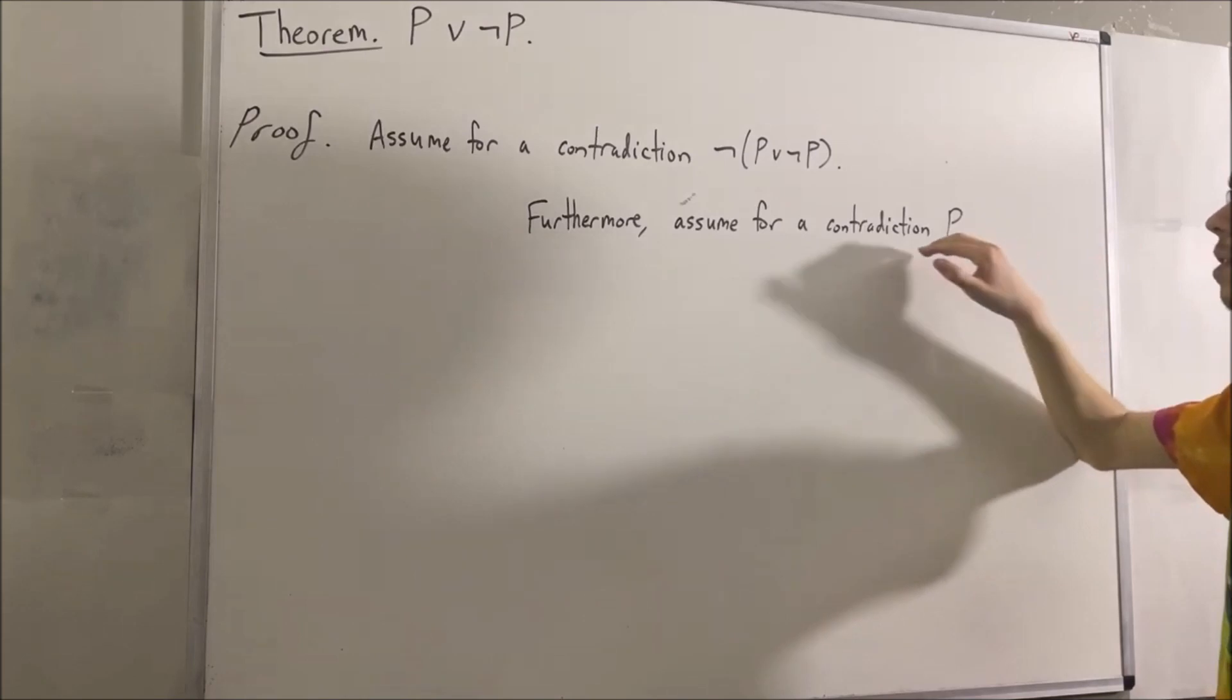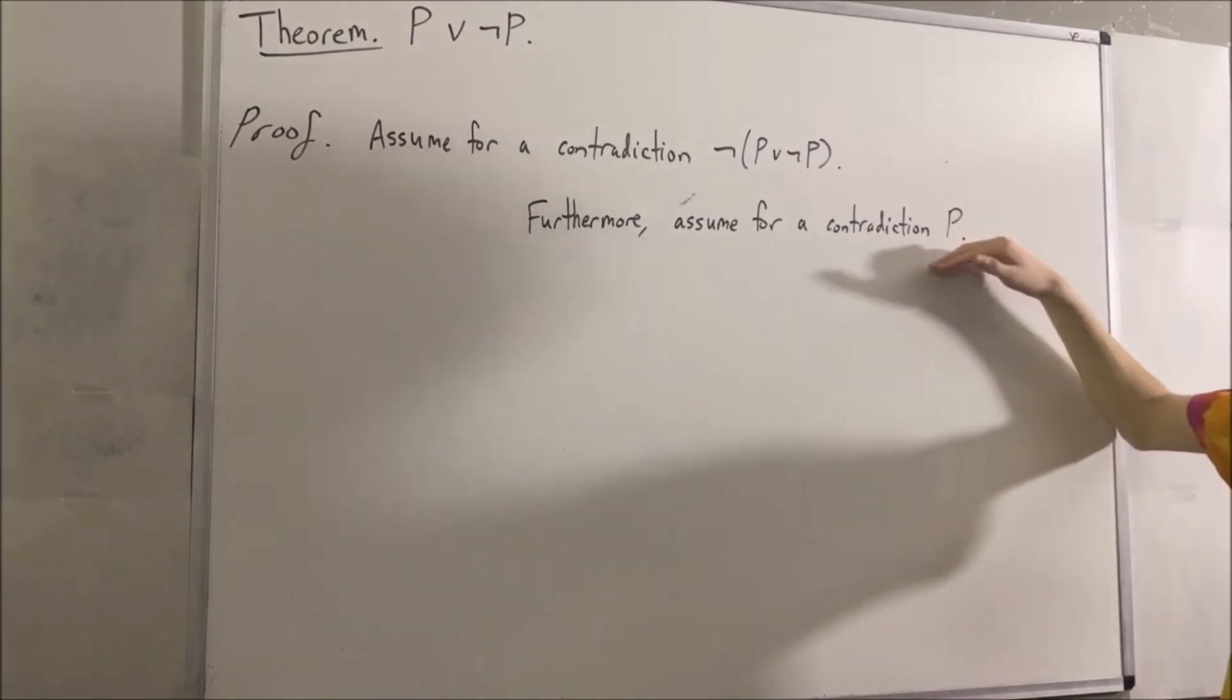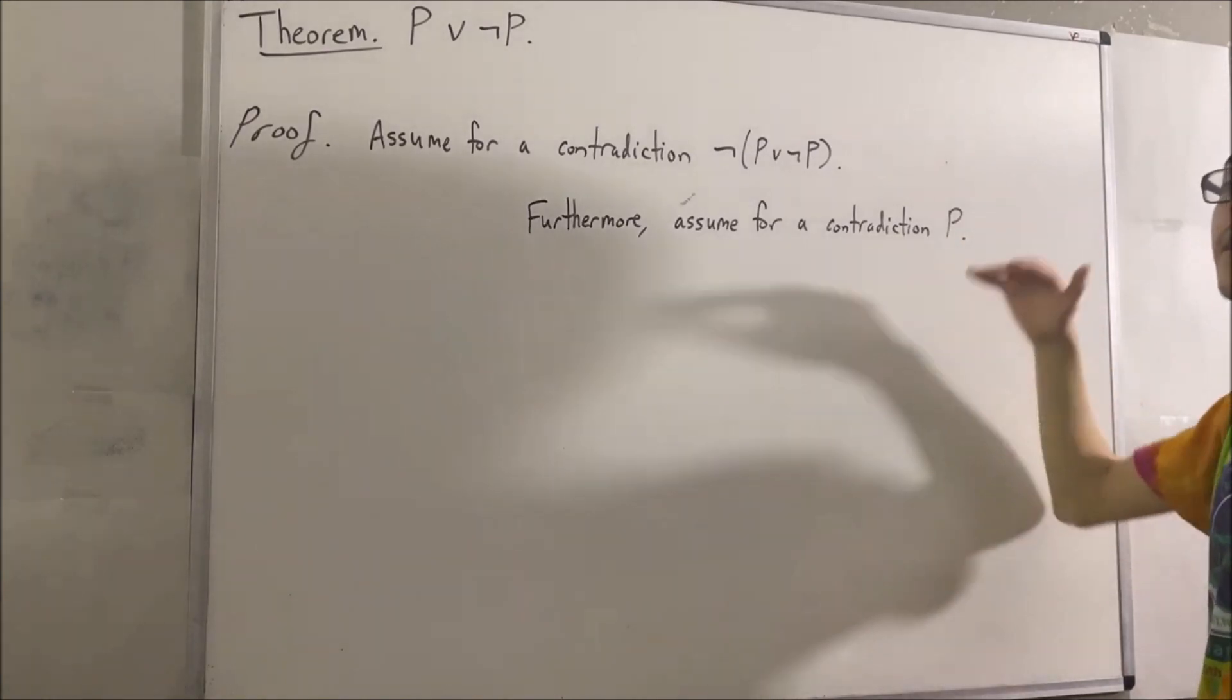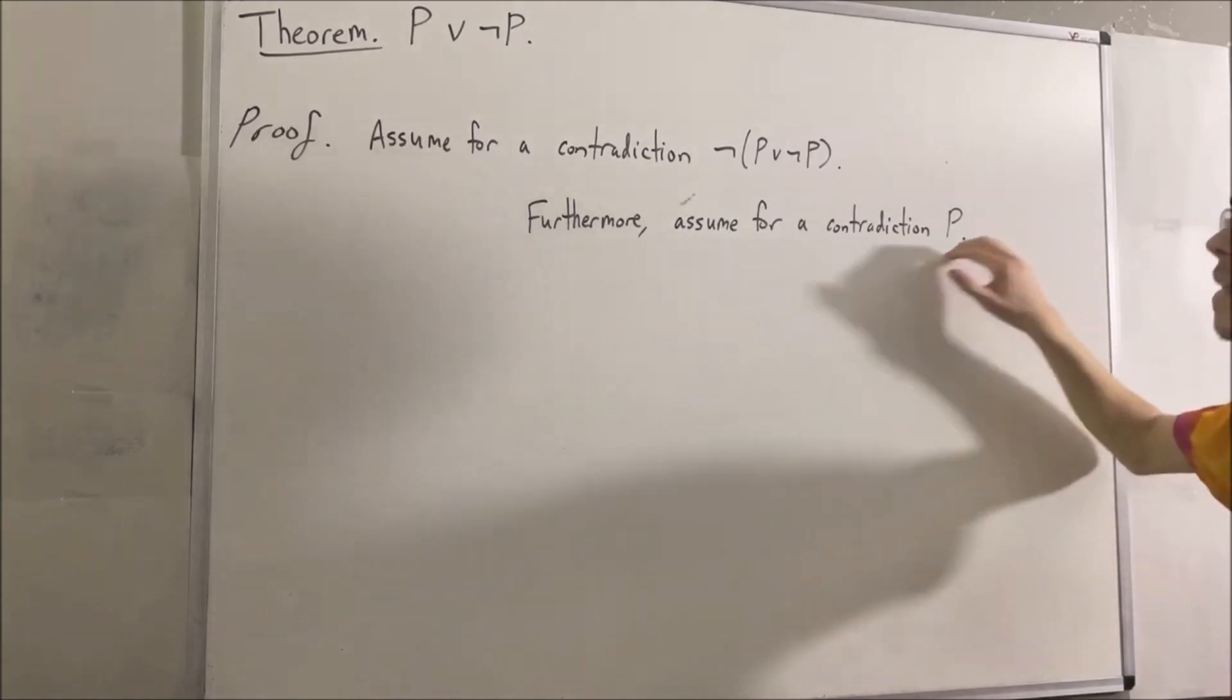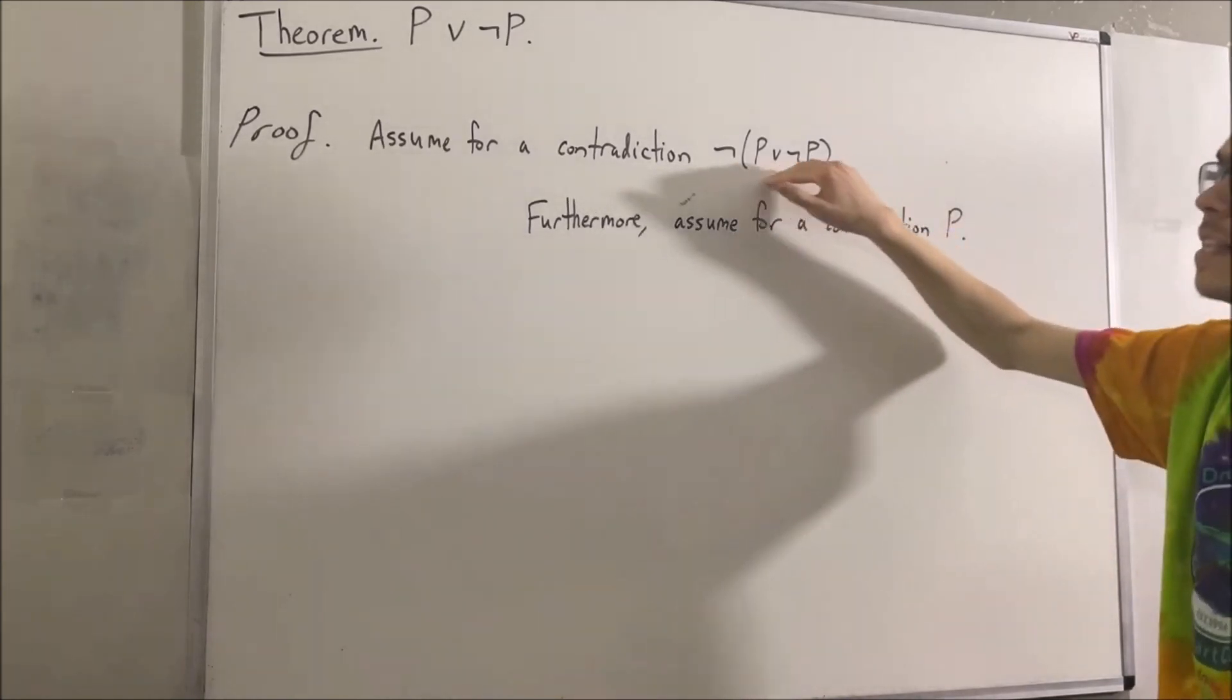And what we're going to do is, with this assumption that P is true, we're going to find a contradiction. And that contradiction will tell us that this can't be true in this universe.